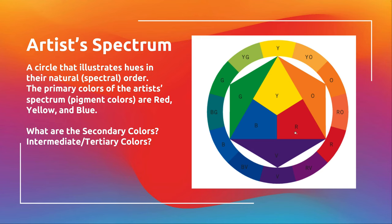You have your primaries, and then you have your secondaries which are mixes of those primaries — it kind of shows the mixes. Then you have your intermediates or tertiaries, and then again a primary. So you can see how the colors relate.